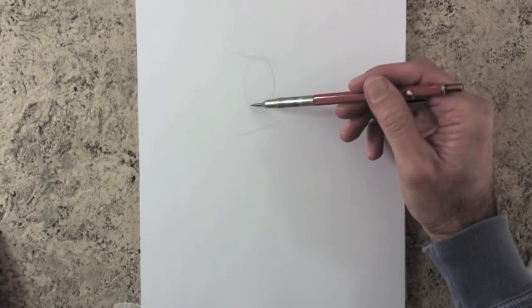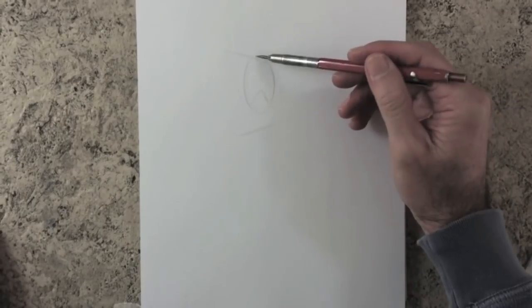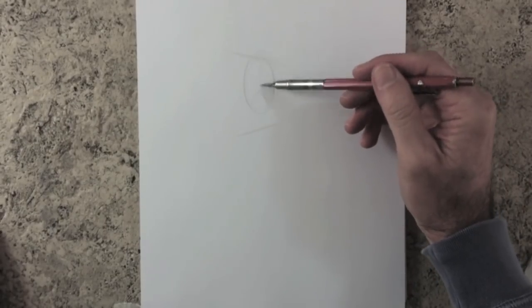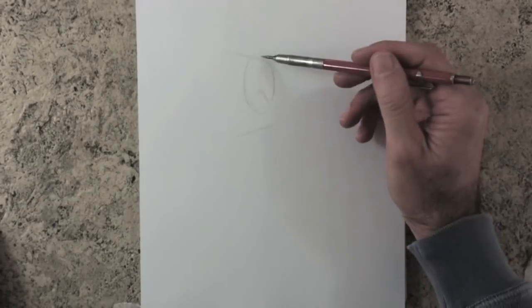This time we start in a similar way as the last time, with an oval for the ribcage. In this case you will have the shoulders and hips slightly tilted, so I put those lines in.